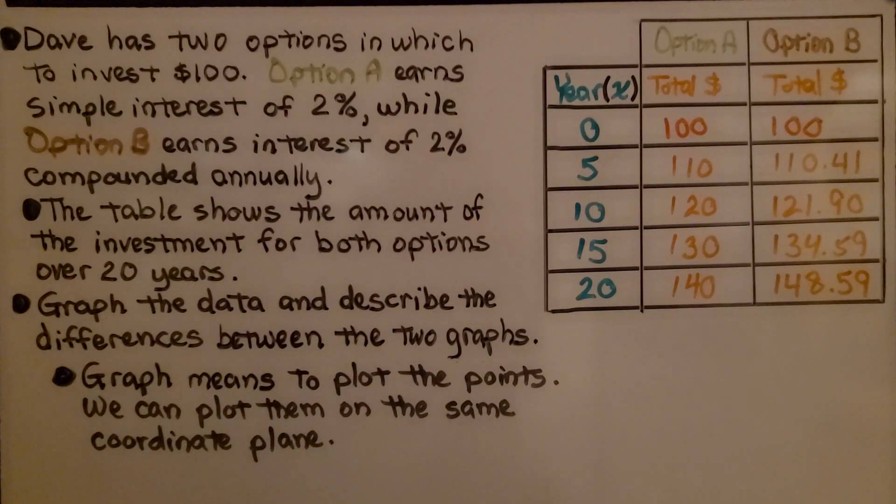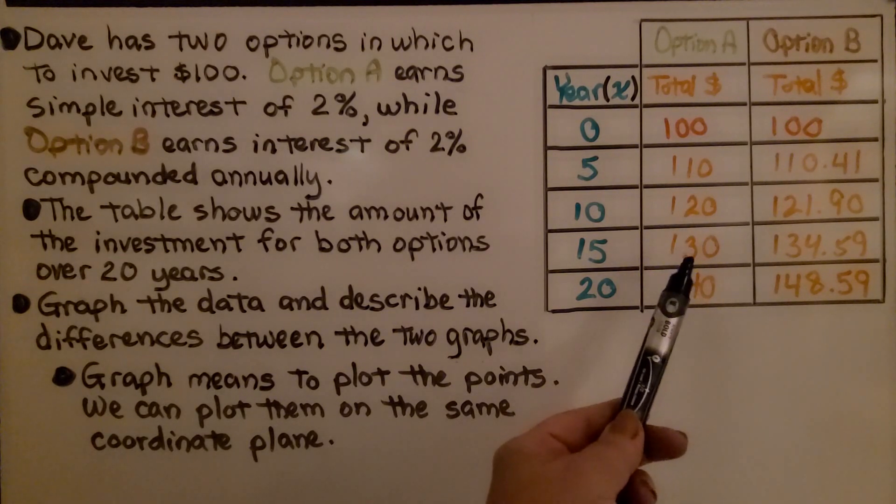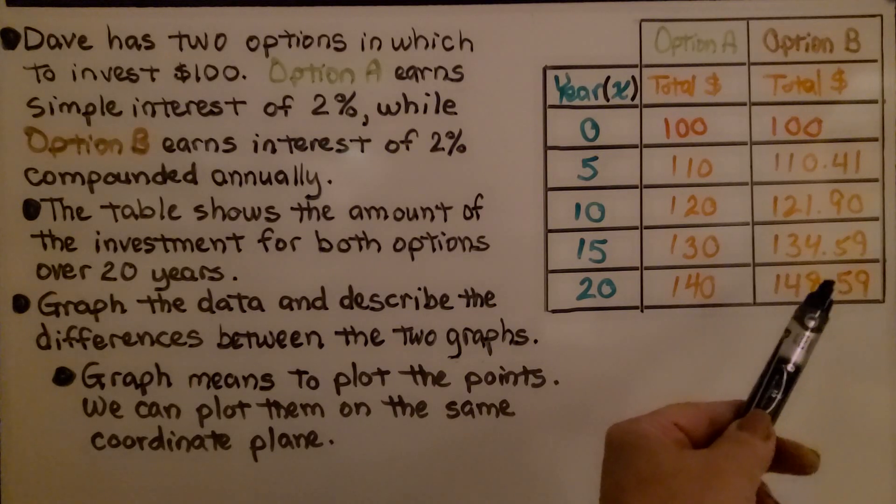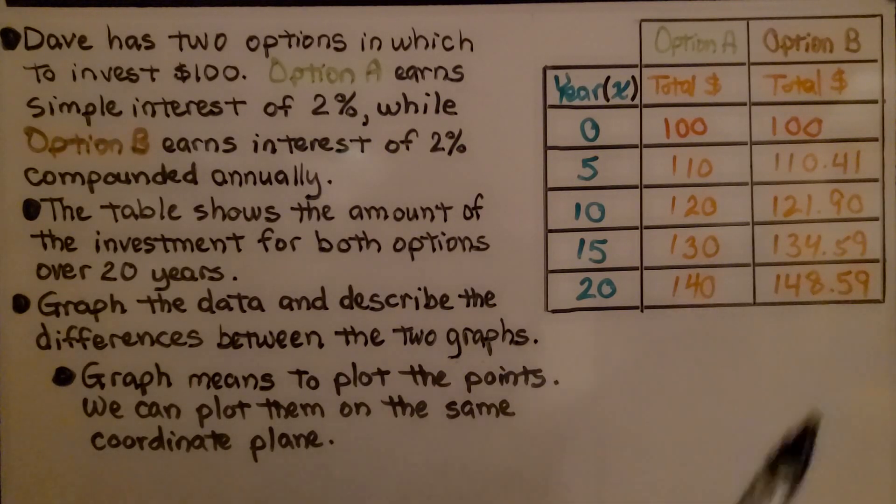Here's our first problem, and notice they're giving us a table. Dave has two options in which to invest $100. Option A earns simple interest of 2%, while option B earns interest of 2% compounded annually. The table shows the amount of the investment for both options over 20 years. Graph the data and describe the differences between the two graphs. Graph means to plot the points so we can plot them on the same coordinate plane.